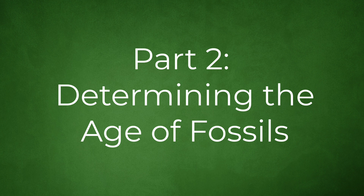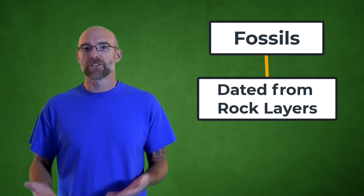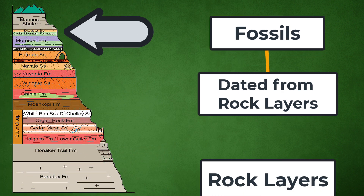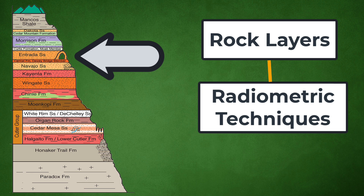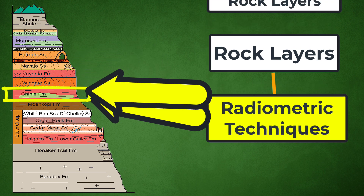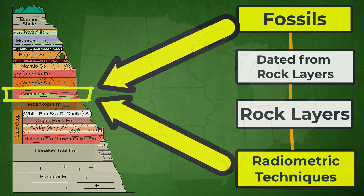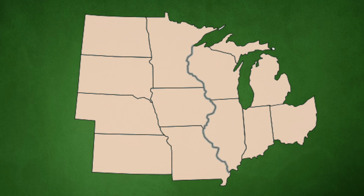Part Two: Determining the Age of Fossils. How can we determine how old a fossil actually is? Fossils can often be dated simply based on the layer of rock in which they're found, and we date rock layers using radiometric dating techniques. Once the age of a given rock layer has been established, we get a pretty good idea of the age of the fossils in that layer, wherever that layer occurs across a broad geographic area.